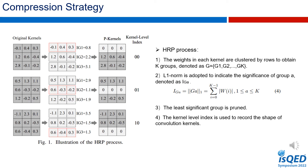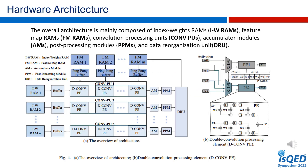All P-kernels will have the same number of non-zero weights, which prevents load imbalance in the hardware architecture while maintaining a 1/K kernel pruning efficiency. The HRP-based hardware architecture for the sparse CONV layers is shown in Figure 4. The overall architecture is mainly composed of index-weight RAMs, feature map RAMs, convolution processing units, accumulator module, post-processing modules, and data reorganization unit. It is pipelined for efficient processing.